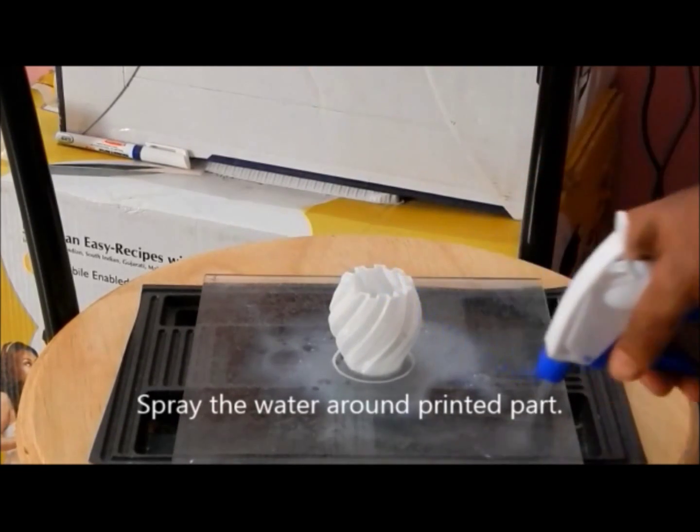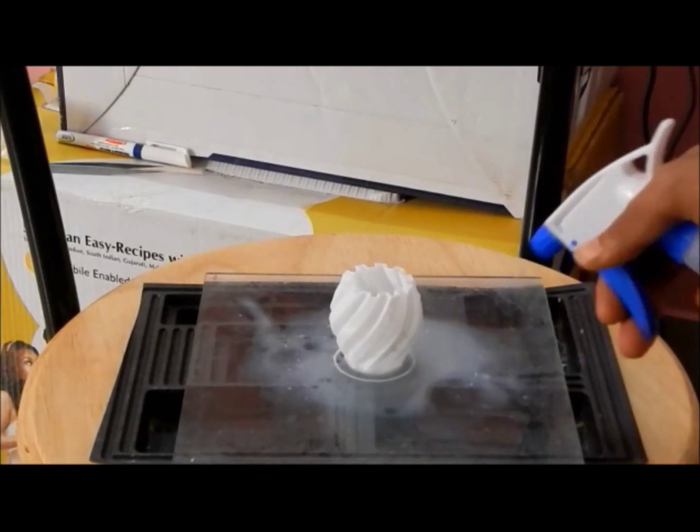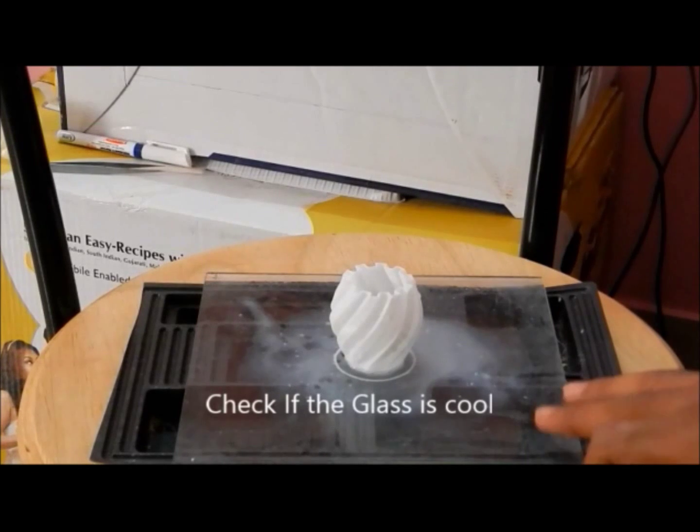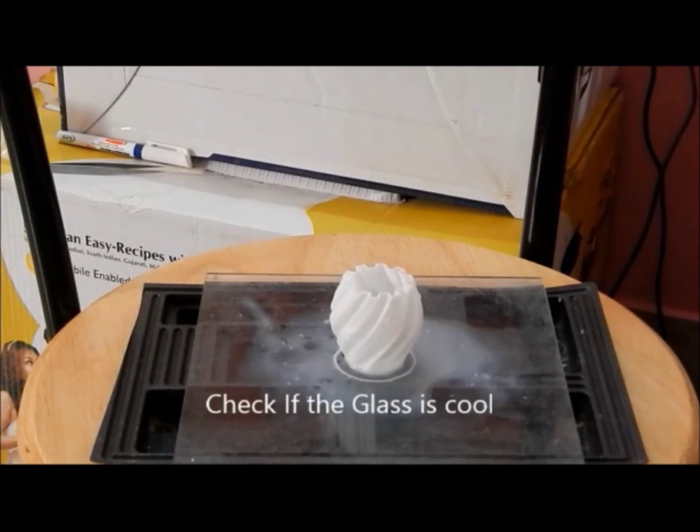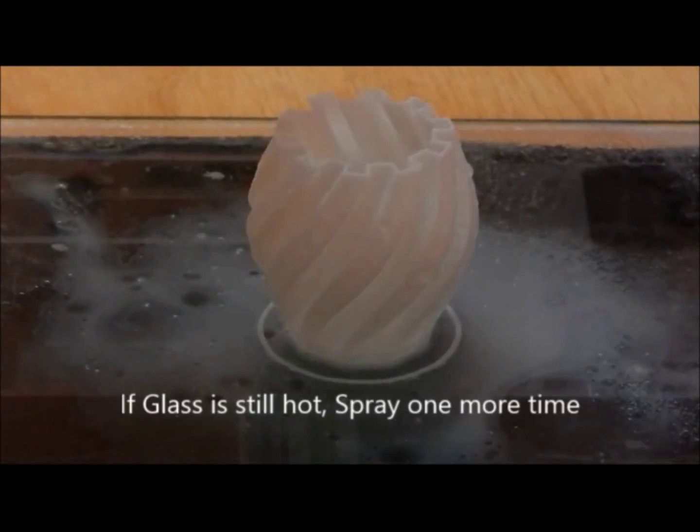You simply have to take out the glass plate and put some cold water on it. You can use cold water from the fridge. As the glass contracts, it automatically pops off the object and comes out really nicely. The surface finish is really cool.